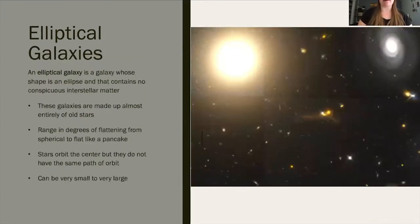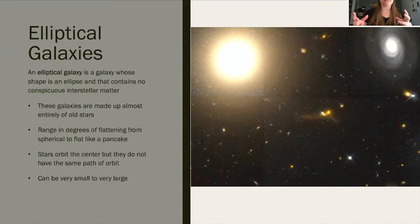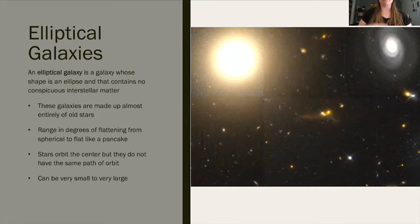Next are elliptical galaxies. Elliptical galaxies are a type of galaxy with a shape that looks like an ellipse — it could be a circle or an oval. They don't really contain any visible interstellar matter that makes up arms and spirals. They're made up almost entirely of old stars and can range from being a sphere to as flat as a pancake, though typically we see them as a sphere. All the stars orbit the center, but not necessarily in the same direction — similar to how the Oort cloud comets orbit the sun but not all in the same direction.